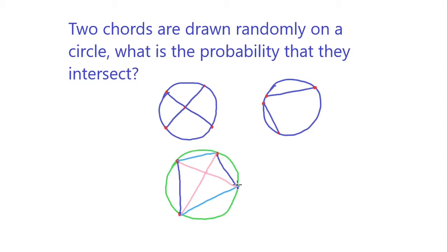And it doesn't really matter how you pick the four points, right? If you think about it, I can move any of the four points anywhere. This always generalizes the same way. And no matter what four points you pick on the circle, there's always one way you can draw it so that you form an intersection, but two ways you can draw it where you don't form an intersection.